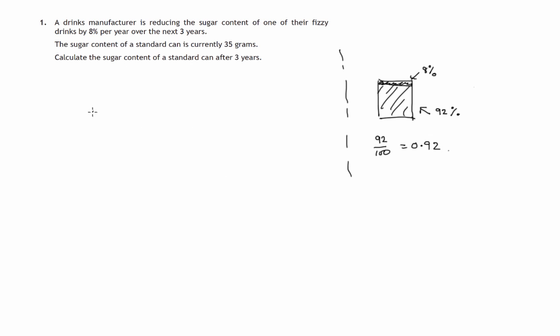Let's have a look at this where we have 35 grams. We find 92% of that by multiplying by 0.92. This is for the first year. So we've found in one step how much sugar remains of that 35 grams. We haven't found 8% and taken it away—we've found 92%. It's a much neater way than finding 8% and subtracting it.